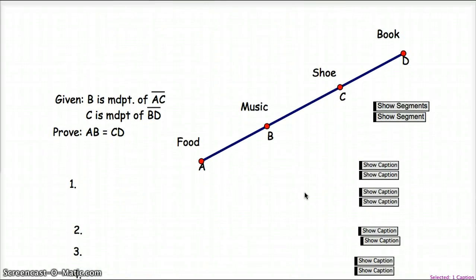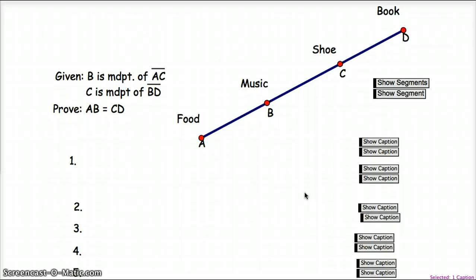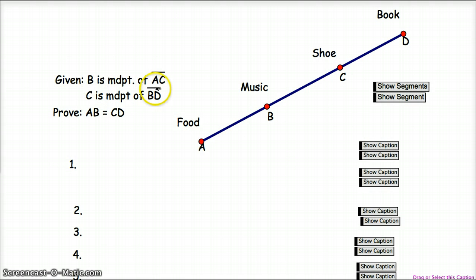I'm going to add a little story to this along with just the segments. So here the given is B is the midpoint of AC and C is the midpoint of BD. We want to prove that the length of AB is equal to the length of CD. So if you look at it from more of a story angle, you could say the music store is in between the shoe store and the food store, exactly the same distance from the shoe store as it is from the food store. The shoe store is in the middle of the music and bookstore, and it's exactly the same distance from the music store as it is from the bookstore. So now we want to prove that the distance from the food to the music store is the same distance as it is from the shoe to the bookstore.